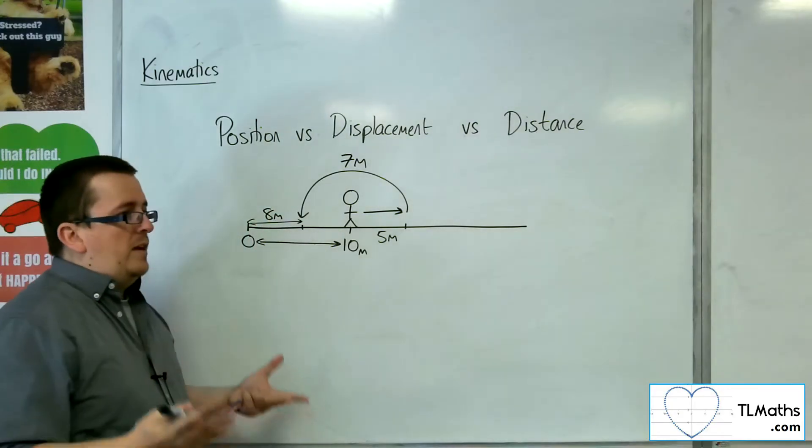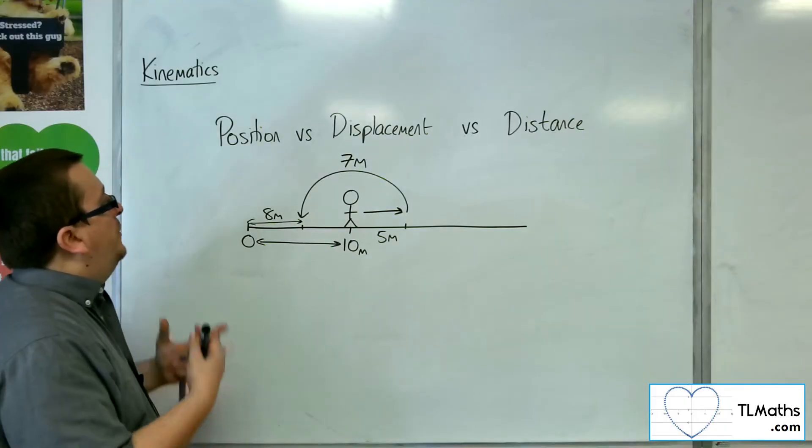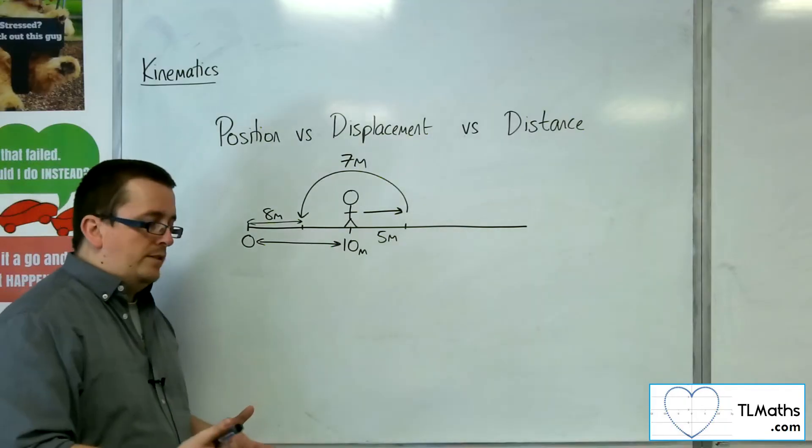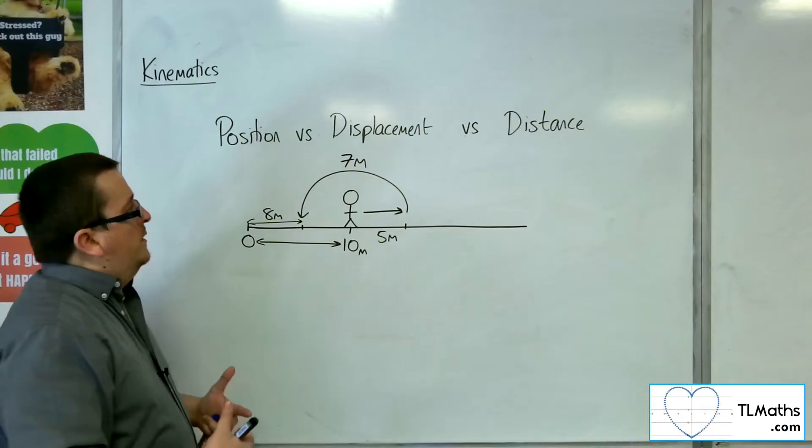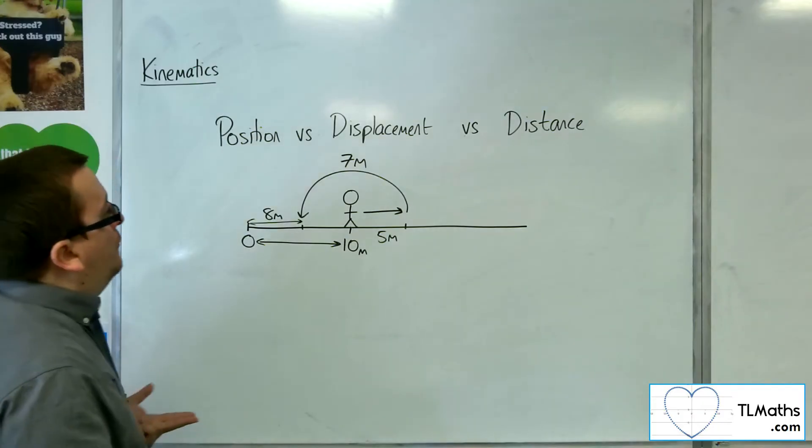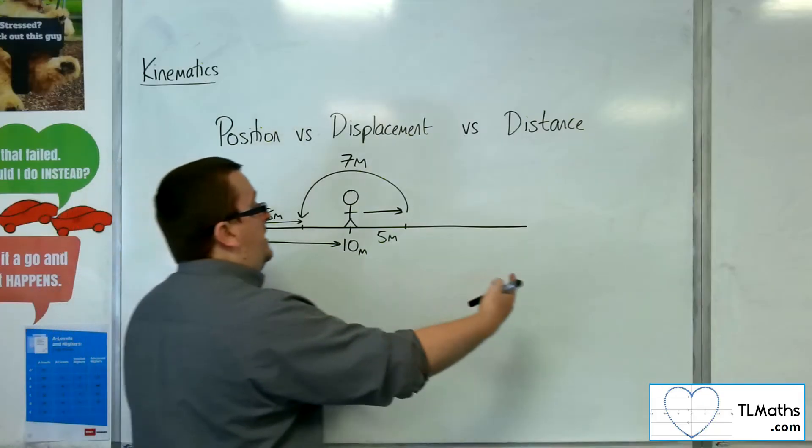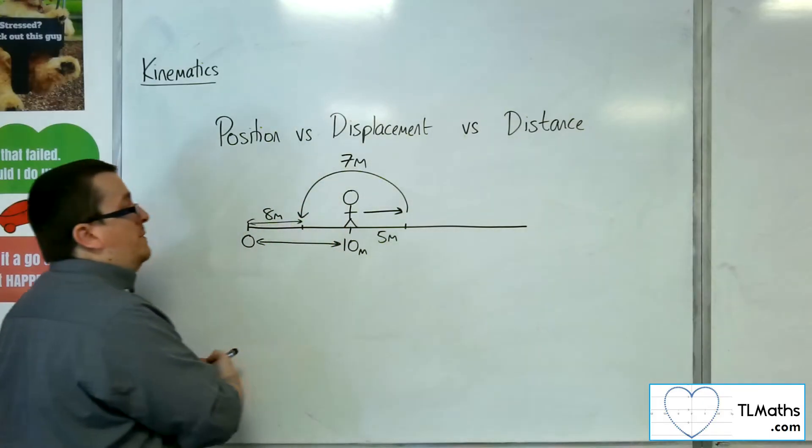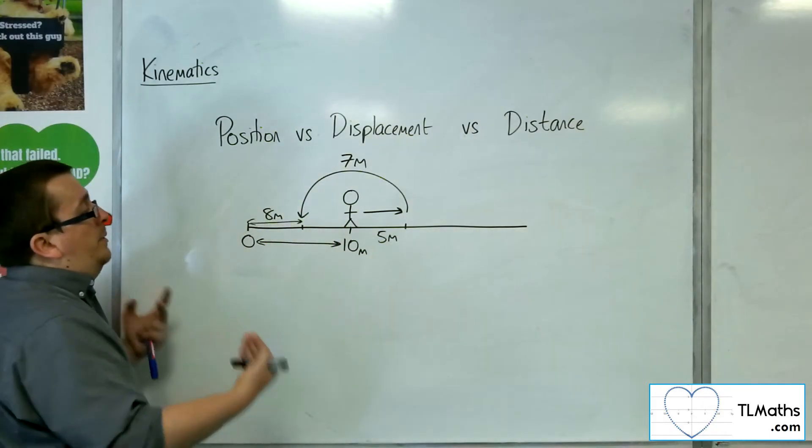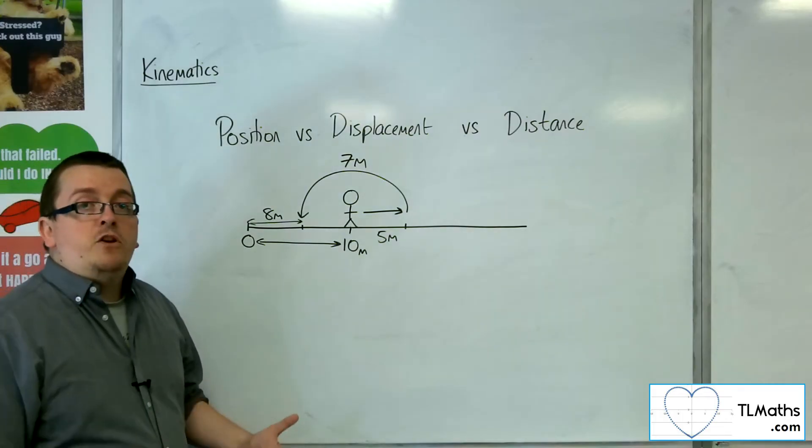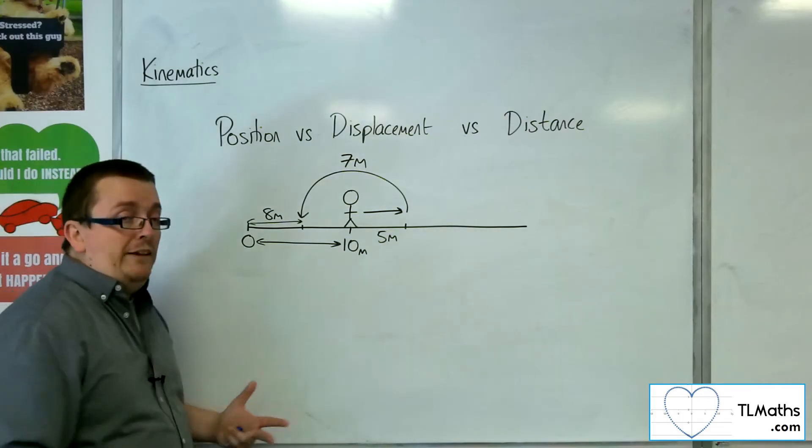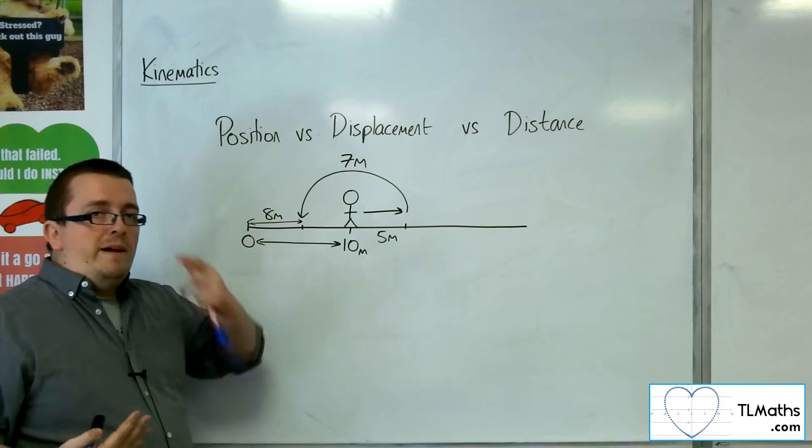So, now let's have a think about these different ideas: position, displacement, and distance. Now, the position of the person after they have made this travel, so gone 5 metres this way and then 7 metres back again, their position is now 8 metres away from the origin. Their displacement can be measured from anywhere.